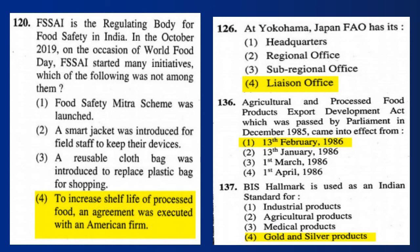Question 120: FSSAI is a regulating body for food safety in India. In October 2019, on the occasion of World Food Day, FSSAI started many initiatives. Which of the following was not among them? Answer: An agreement was executed with an American firm to increase the shelf life of processed food.